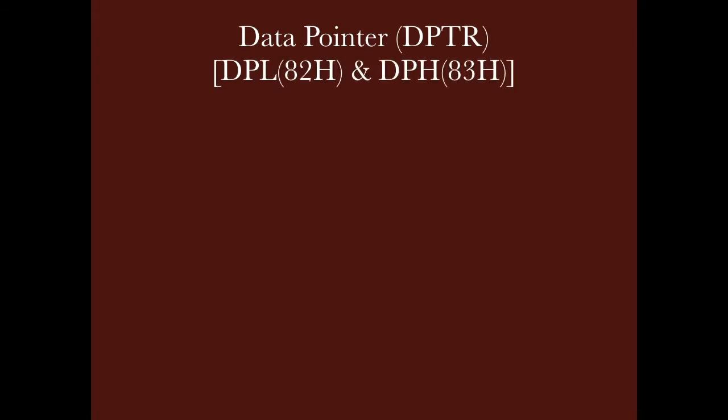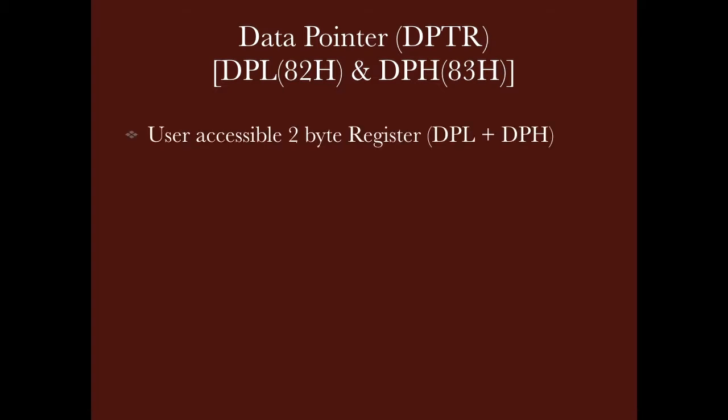Then we have the data pointer register, DPTR. In DPTR, we have DPL at 82H and DPH at 83H. The maximum size of RAM we can connect is 64K, which means it has a 16-bit address. For this reason, DPTR is a 2-byte register made of two different registers: DPL, the data pointer lower byte, and DPH, the data pointer higher byte. We use this register as a memory pointer when we deal with external data.